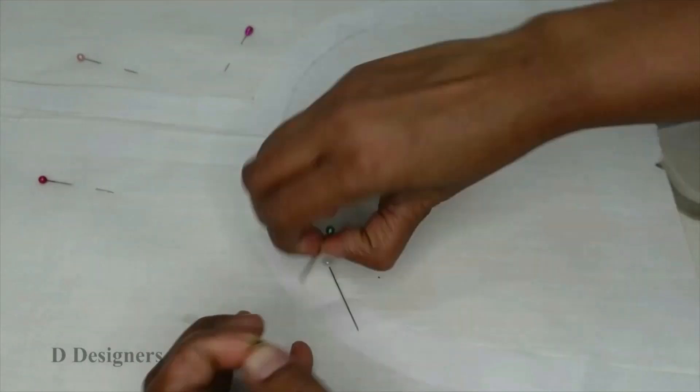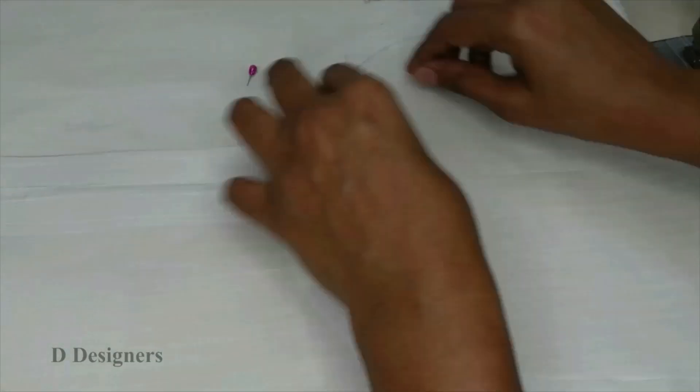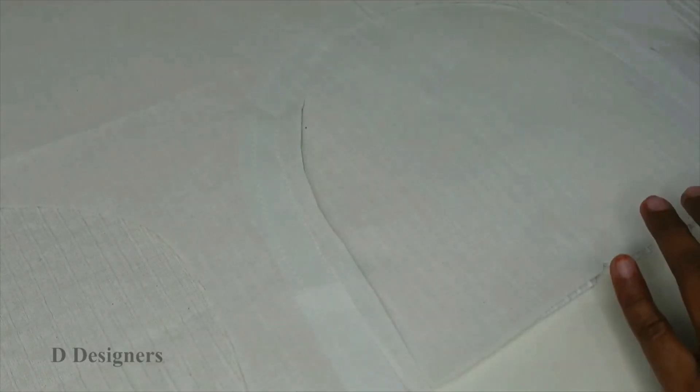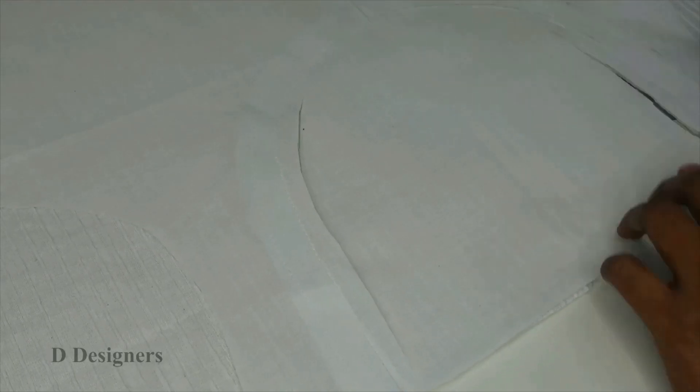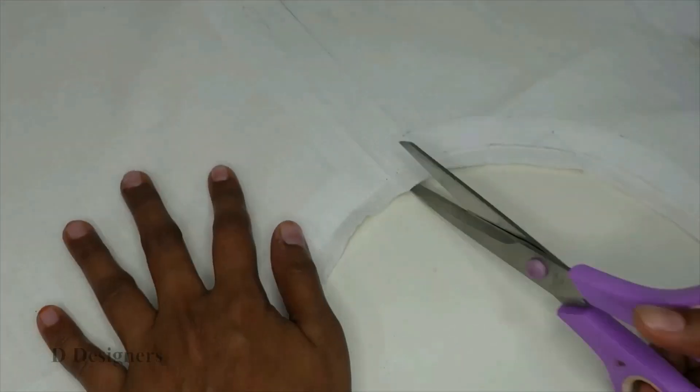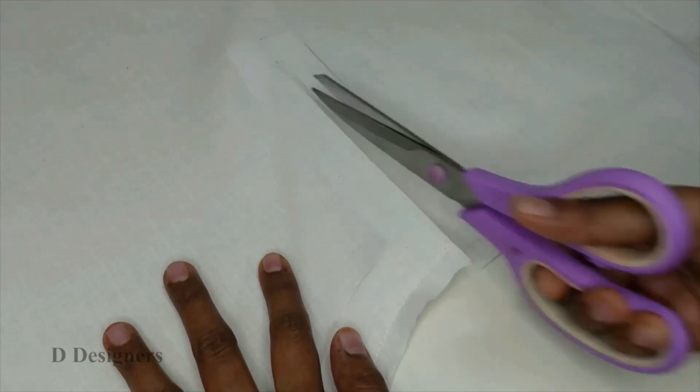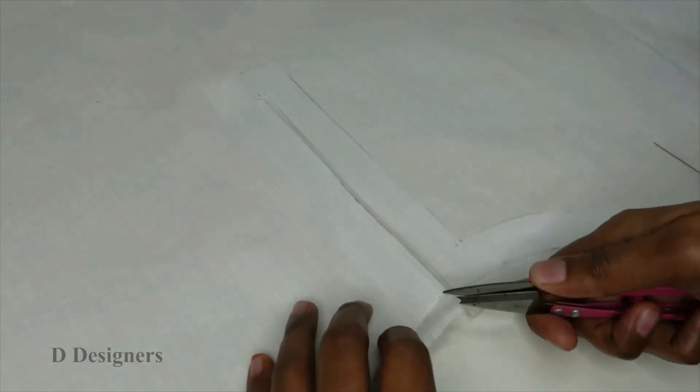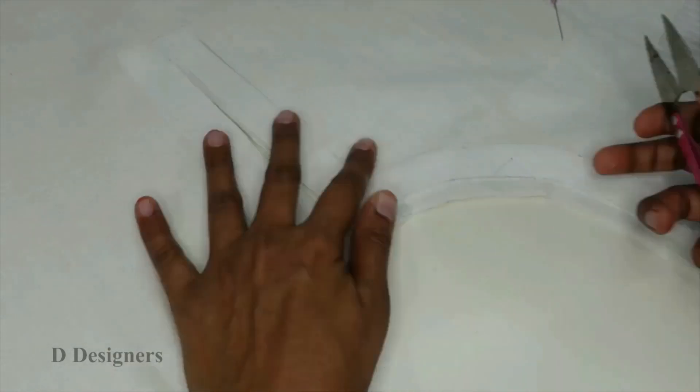After stitching, I have removed the pins. I am going to cut the neckline, leaving half an inch around the neck and cut the placket as well. And make a slit in the corners of the placket and around the neckline as well.